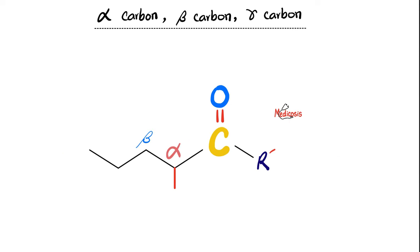Do not confuse primary/secondary/tertiary carbon with alpha, beta, and gamma carbon — they are two different systems. The carbonyl (carbon double-bonded to oxygen) is ground zero. Next to it is the alpha carbon, then the beta carbon, then the gamma carbon, etc. We see carbonyl in aldehydes, ketones, carboxylic acids, and their derivatives: esters, amides, anhydrides.